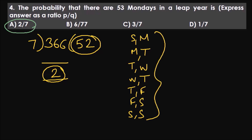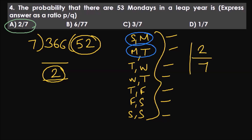How many times do you see Monday? You have Sunday-Monday and Monday-Tuesday — two such possibilities. So there are two favorable outcomes out of seven total outcomes. The probability is two by seven. This doesn't change no matter which day they ask — whether 53 Wednesdays or 53 Fridays, it's always two by seven for a leap year, and one by seven for a normal year.